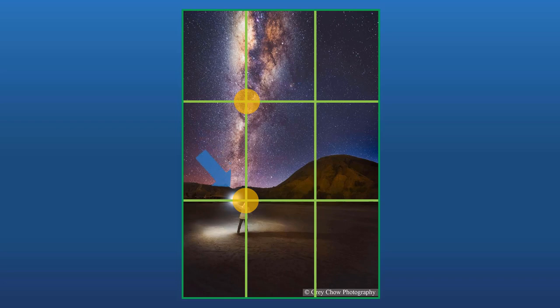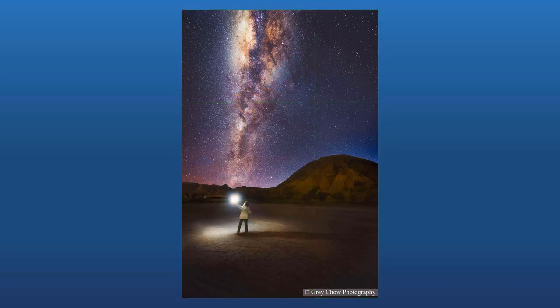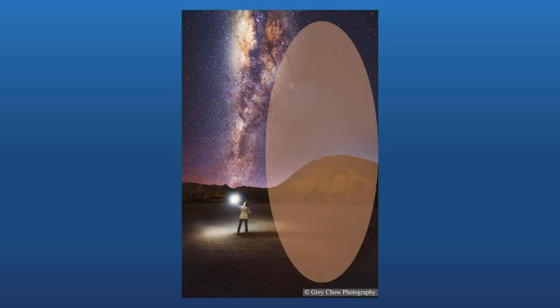Like this photo here — both the Milky Way and the person are on the left side, and there's nothing on the right side. So try to avoid composition like this. There's a lot to cover for the rule of thirds.